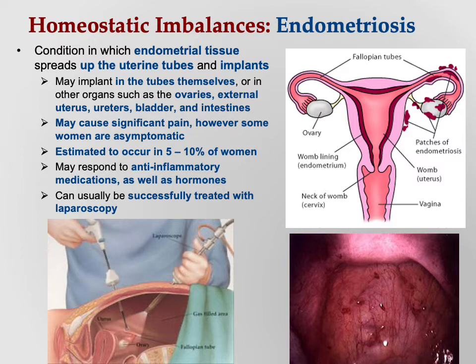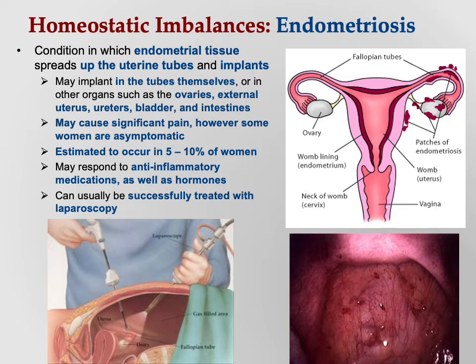Endometriosis is a condition in which endometrial tissue spreads up the uterine tubes and implants outside the uterus. The diagram shows the endometrium, which normally lines the uterus, spreading into the uterine tubes and onto the ovaries or the outside of the uterus. It can cause significant pain, though many women are asymptomatic. It's estimated to occur in five to ten percent of women and may respond to anti-inflammatory medications or hormones.